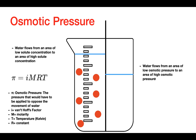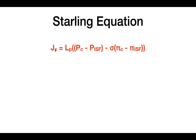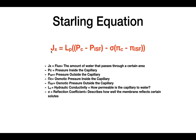Now we can put these two different types of pressure together in order to determine how fluid is going to flow across the capillary. This is called the Starling equation, and it basically calculates the flux of water. J is the symbol for flux, and flux is simply the amount of water that passes through a certain area. The next variable in the Starling equation is Lp, otherwise known as the hydraulic conductivity.